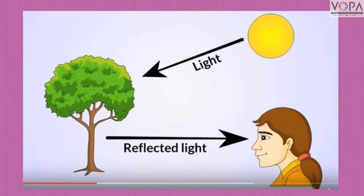Prakashachya strotatun ji prakashkirna bahyer padat, tya prakashkirna ekhajya vastu var — manje object var — padleya nantar, tichya surface paasun — manje tichya prushtabhagapaasun — ti parvartit hotat. Yaala reflection of light manje prakashache parvartana ase mhanat. We see the object when the reflected rays reach our eyes.